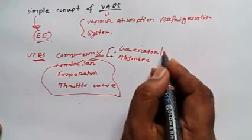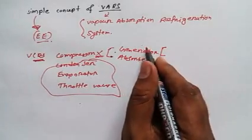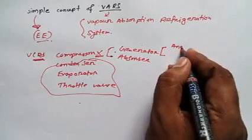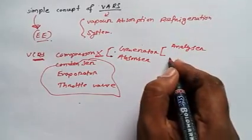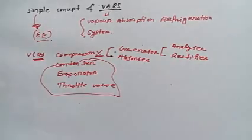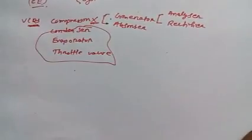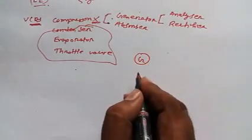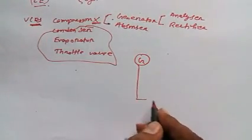In place of generator, we are using generator as well as two other things - one of them is analyzer and another one is rectifier. I will draw a diagram so you can understand about it in a much better way.